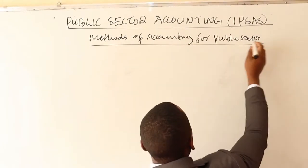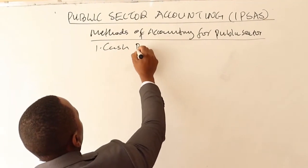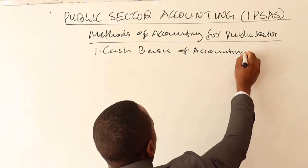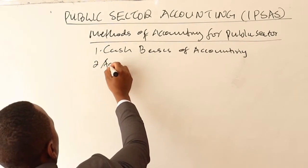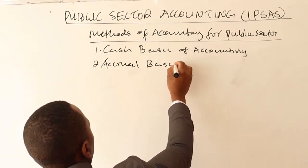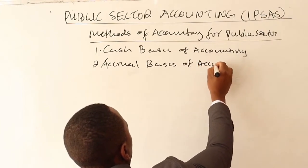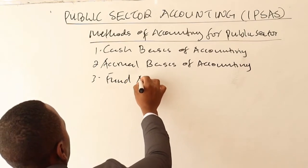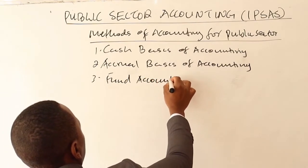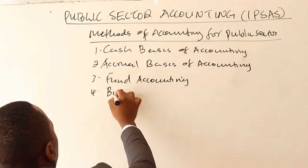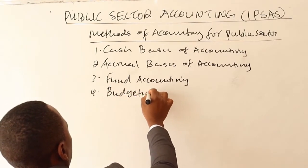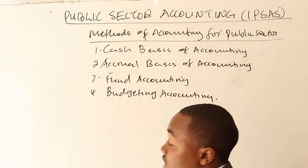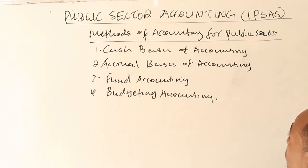Now let's look at the methods of accounting for the public sector. Number one, we have the cash basis of accounting. Two, there is the accrual basis of accounting. Three, we have fund accounting. And number four, we have budgeting accounting. Those are the methods of accounting for the public sector.